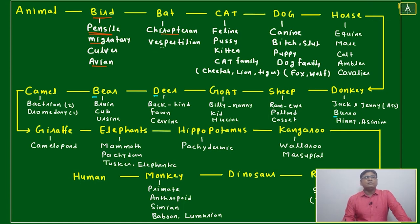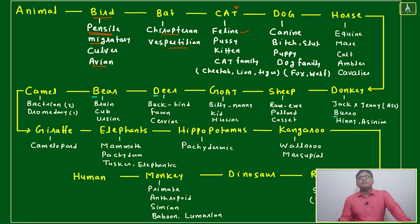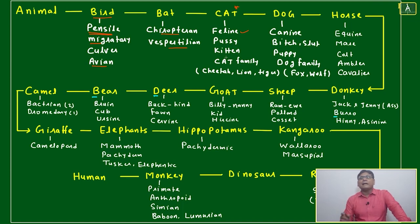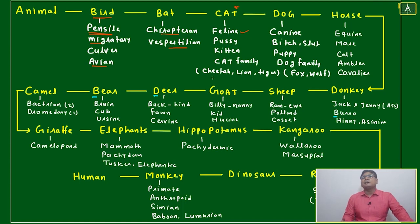Next is bat — chiroptera, that is called bat, and vespertillion, that is also related to bat. Next is cat — many times we will see the word feline. This is the zoological name of cat. Anywhere we face the word feline, feline nature, feline character, feline type — we can immediately connect it with cat.